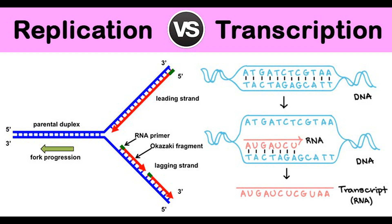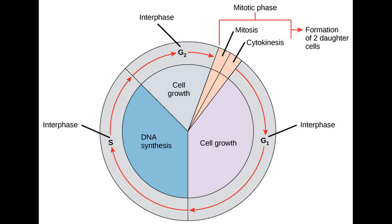Remember also that DNA is directional, having a 5' and 3' end. Directionality is very important in replication, as we'll see in a moment. The process of DNA replication occurs during the part of the cell's life cycle known as interphase.